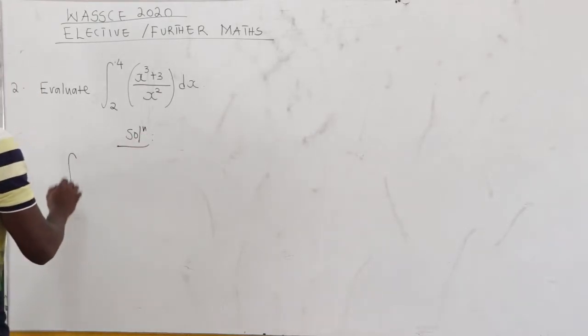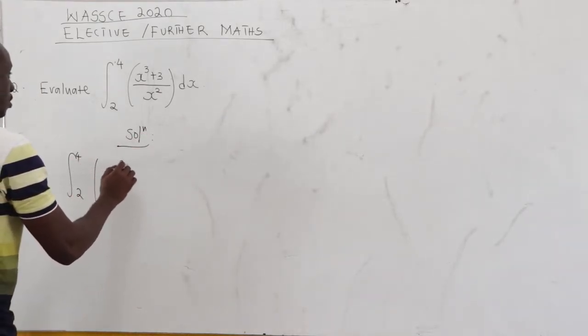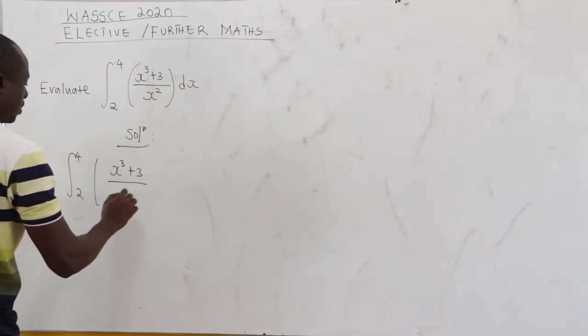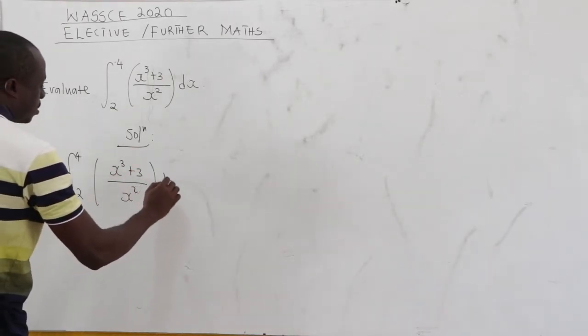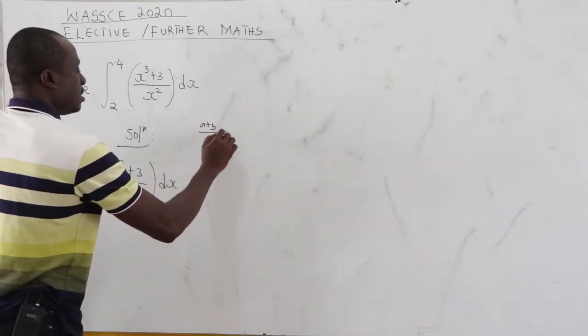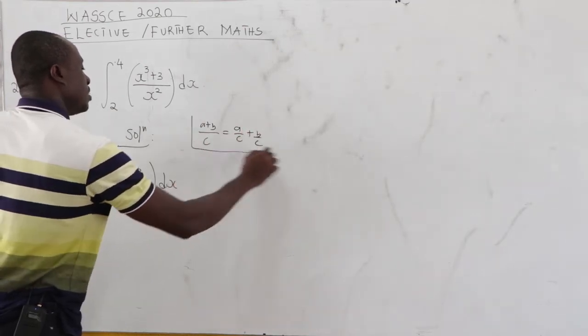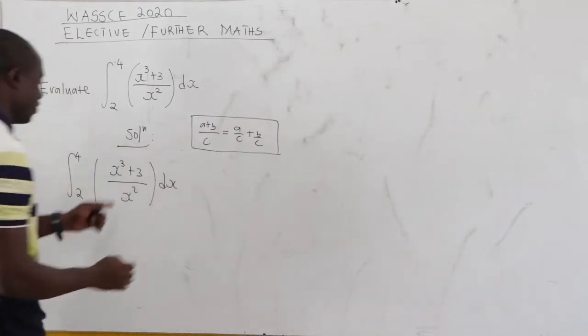So we have our integral from 2 to 4 of x cube plus 3 all over x square dx. Now from algebra, we know that if you have a plus b all over c, this is the same as a over c plus b over c. So we apply this over here.